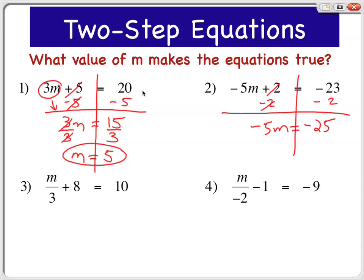Now to get m by itself, you have to divide by exactly what's in front of the variable, because it means negative 5 times m, so I'm going to divide both sides by negative 5. Negative 5 divided by negative 5, they cancel out, so I'm left with m equals negative 25 divided by negative 5 will be positive 5.